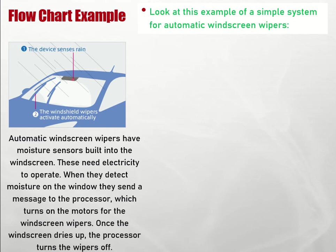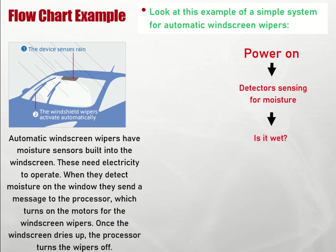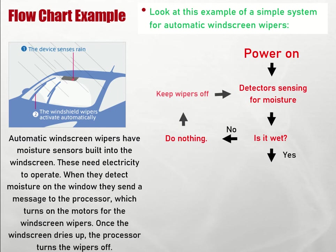If I wrote this down in a simple way, the power on is the first step. Then the sensor is detecting, sensing for moisture. It has to think, it has to make a decision: is the windscreen wet? There are two options — yes or no. If the answer is no, then the system doesn't do anything; it keeps the wipers off and goes back to the sensor. So you've got a little loop there.